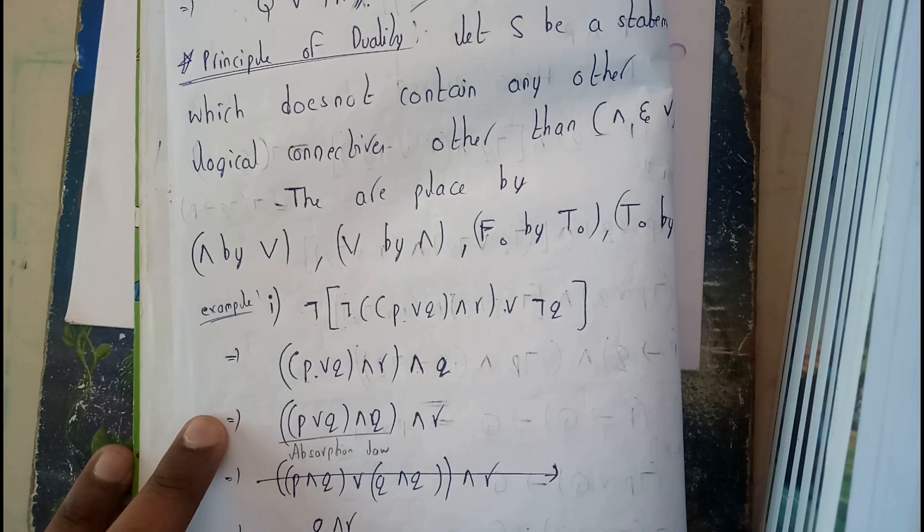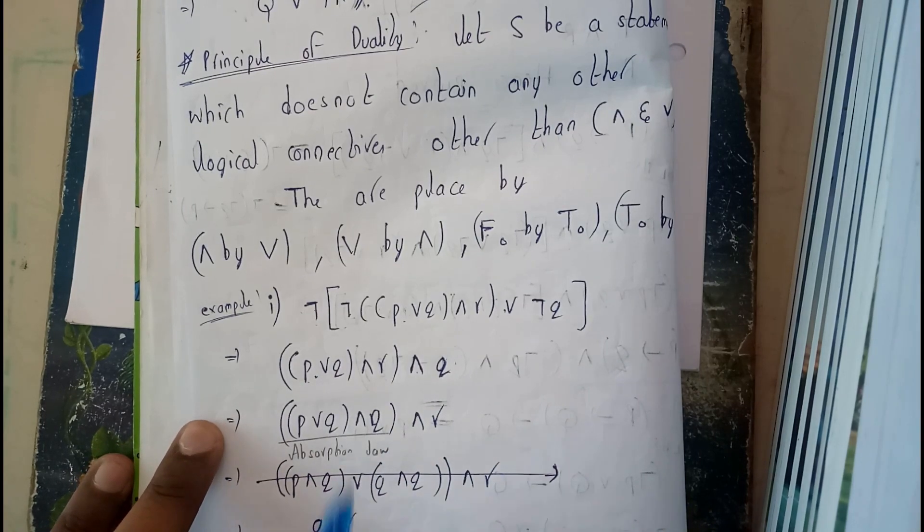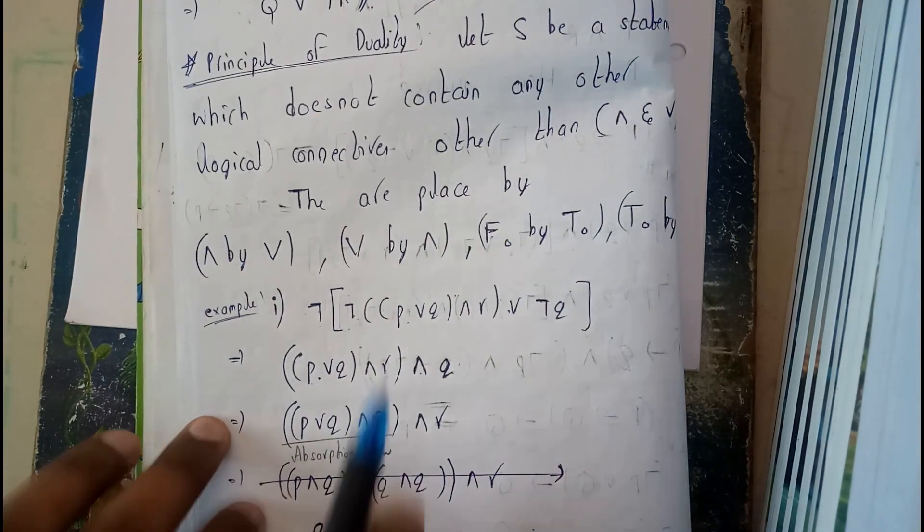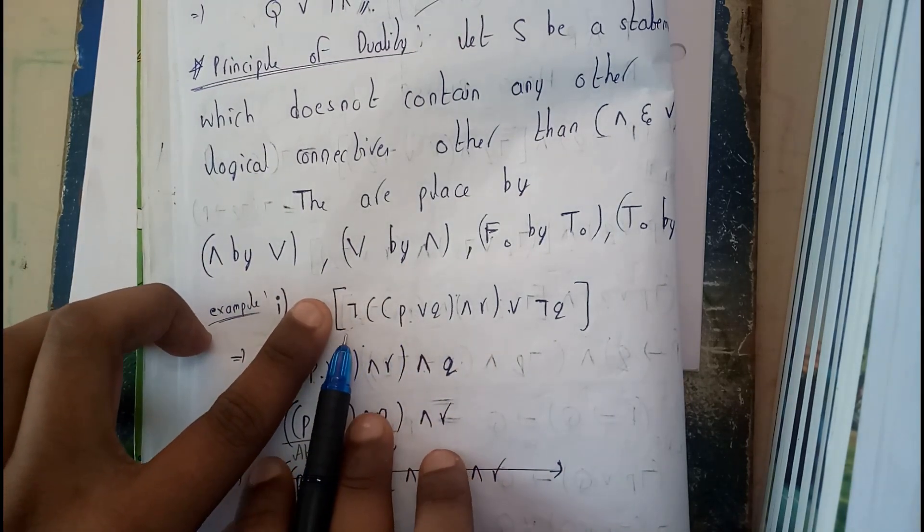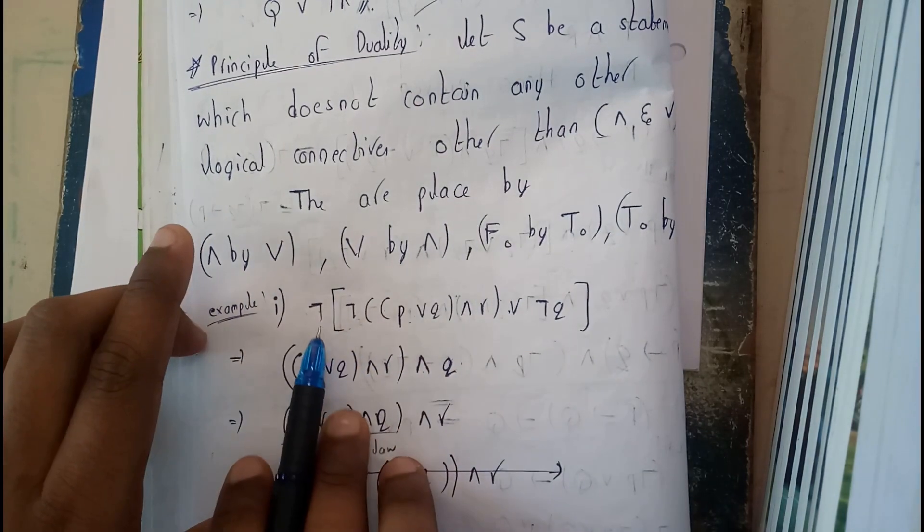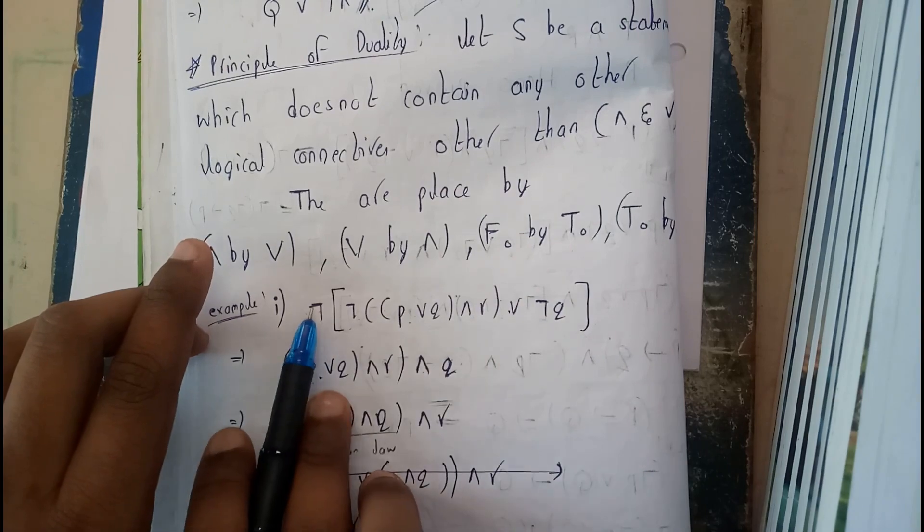He may ask: find the duality of this statement or find the negation of this. He may ask like this: whole power D, which indicates negation. So I can just simply say what's there in that.